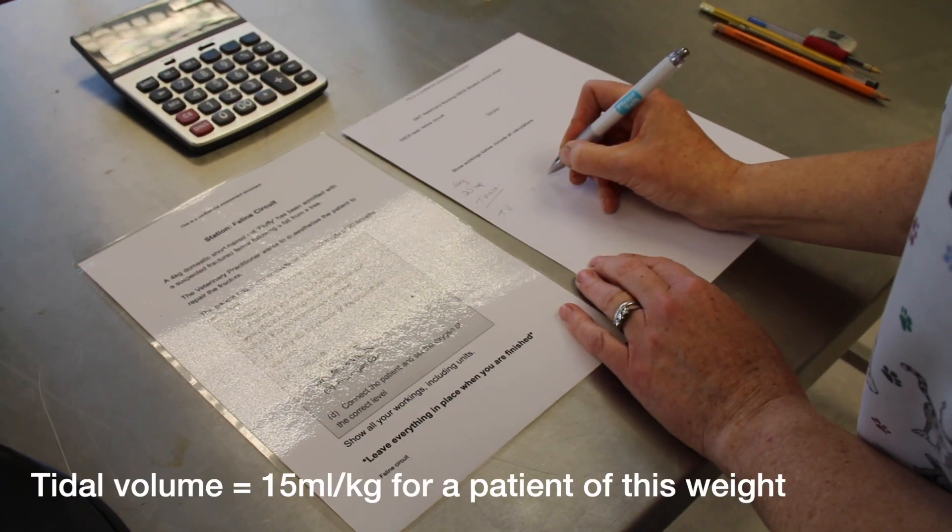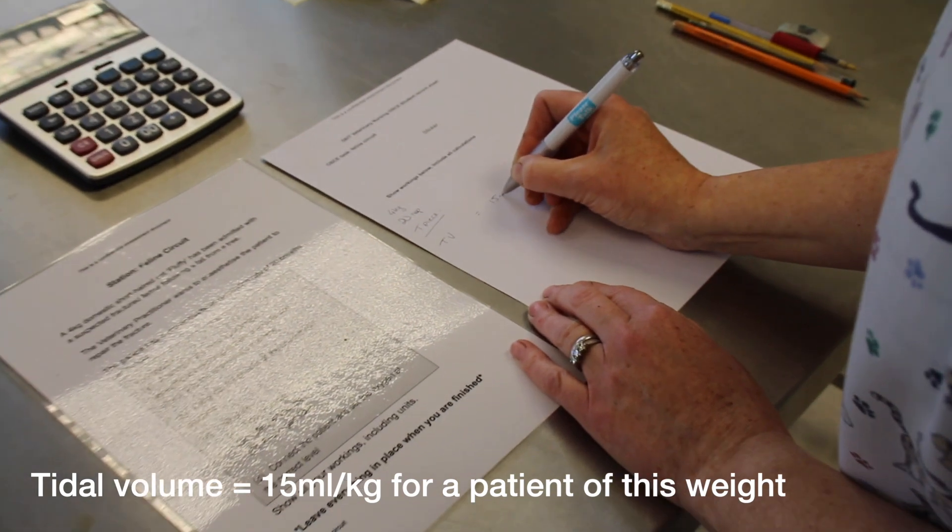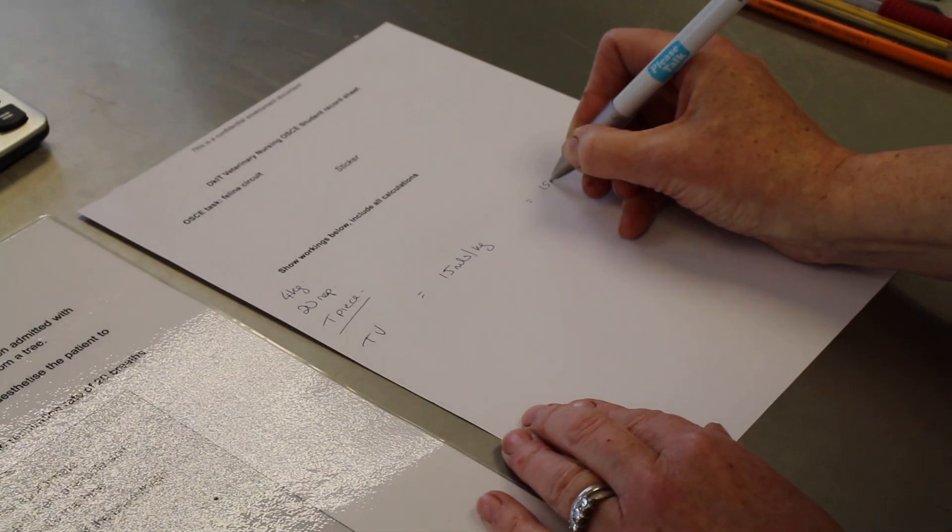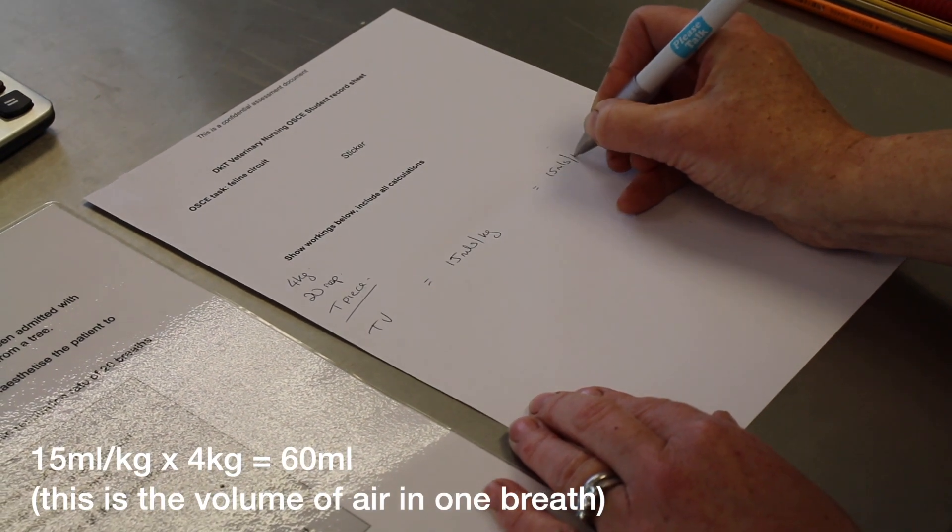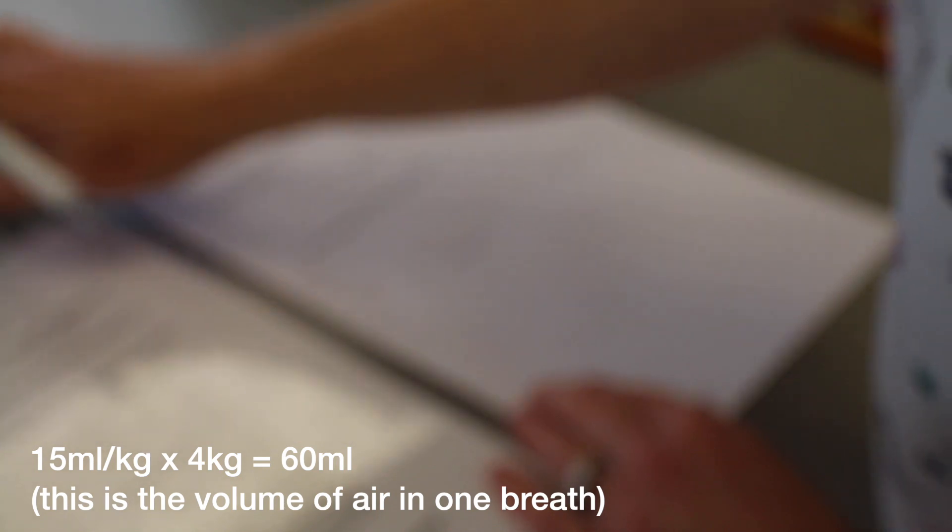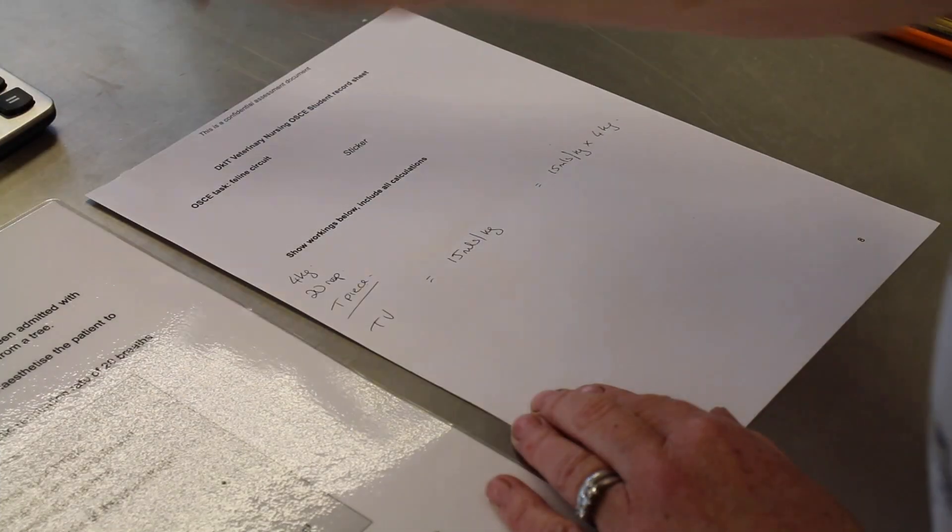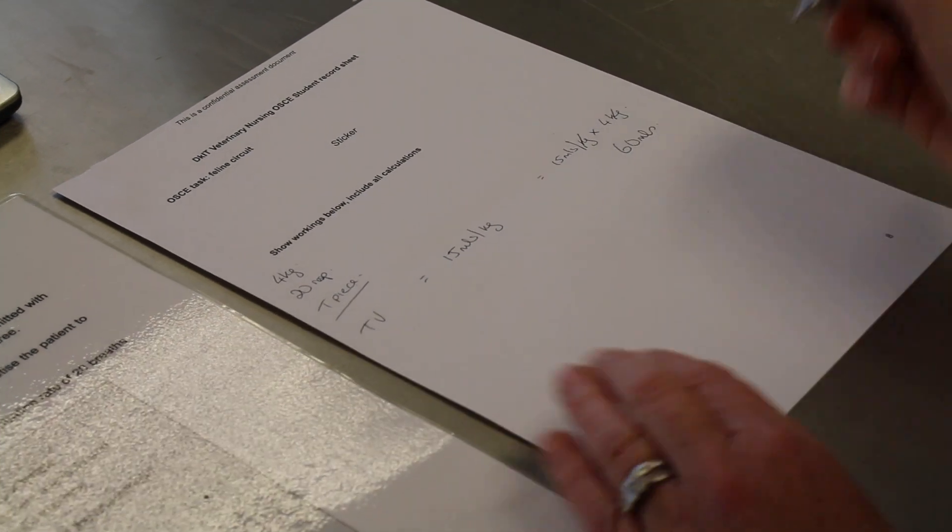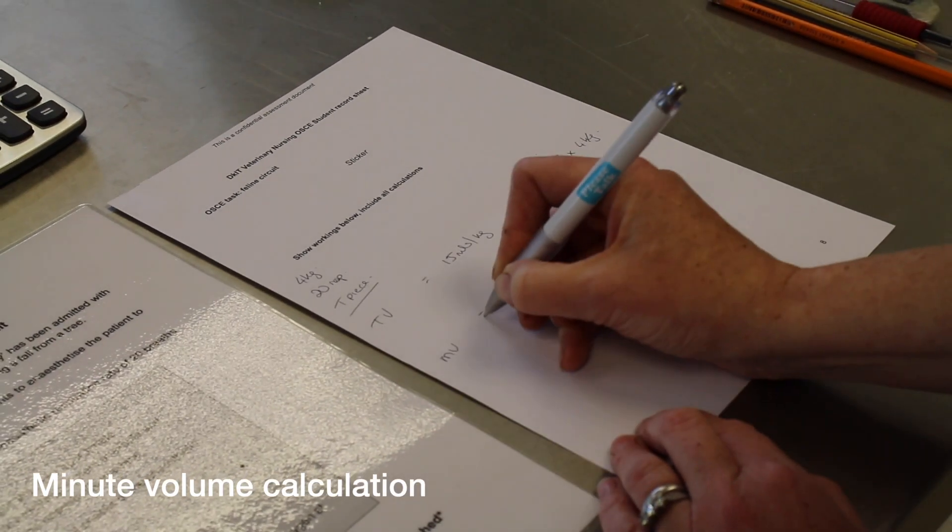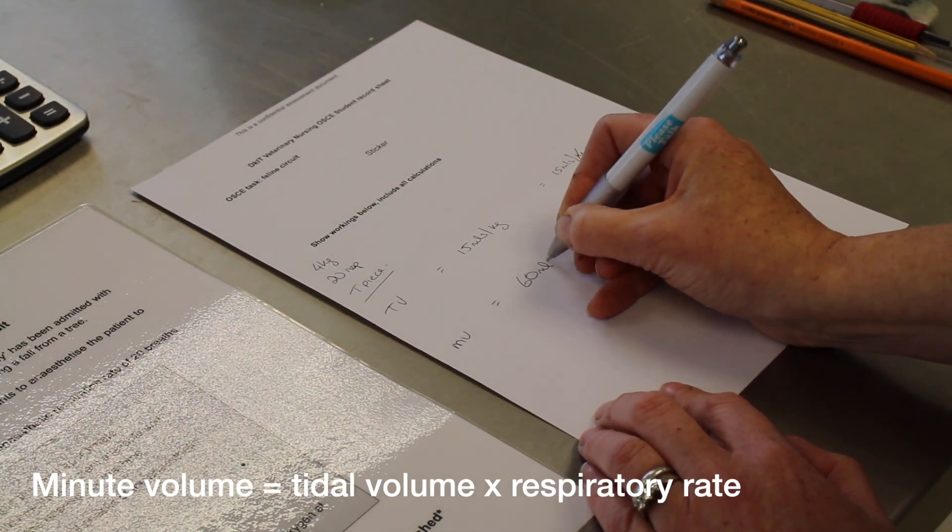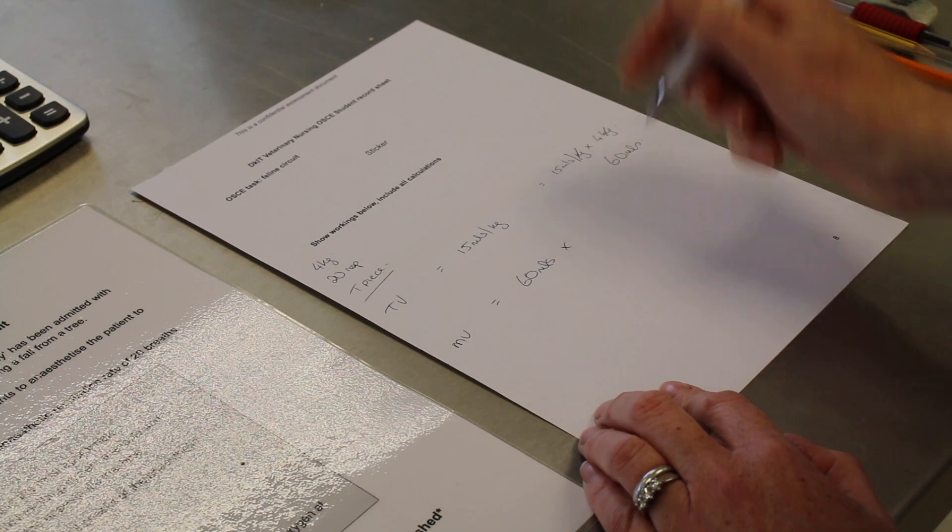In a small animal, it's 15 mils per kilogram, so it is 15 mils per kilogram multiplied by 4 kilograms. 15 times 4 equals 60 mils. Minute volume is your tidal volume answer, 60 mils, multiplied by the respiration rate.